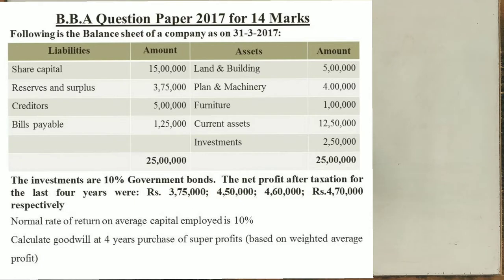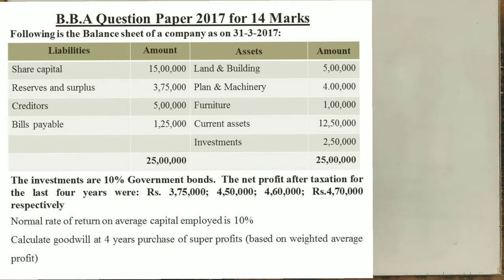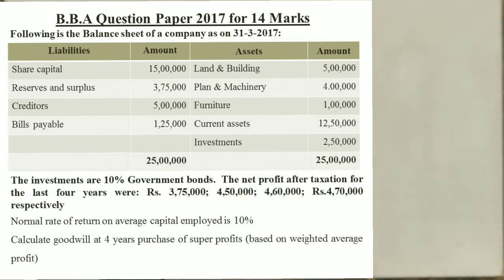Following is a balance sheet of a company as on 31st March 2017. Liabilities include share capital, reserves and surplus, creditors, and bills payable. Assets include land and building, plant and machinery, furniture, current assets, and investments. Total balance sheet is ₹25 lakhs. The investments are 10% government bonds. Net profit after taxation for the last 4 years were ₹3,75,000; ₹4,50,000; ₹4,60,000; and ₹4,70,000 respectively. Normal rate of return on average capital employed is 10%. Calculate goodwill at 4 years purchase of super profits based on the weighted average method.